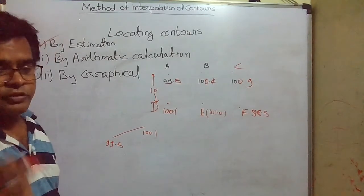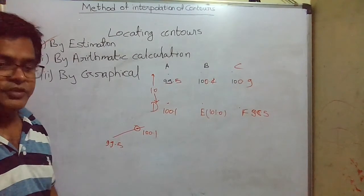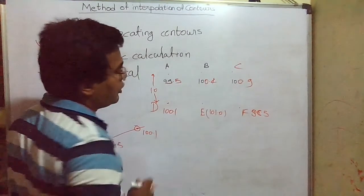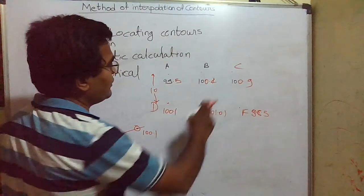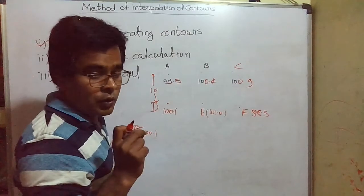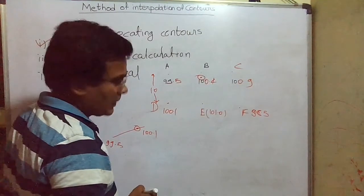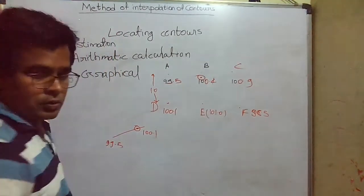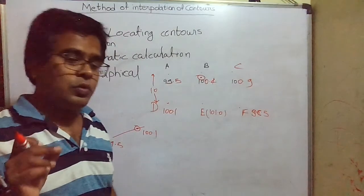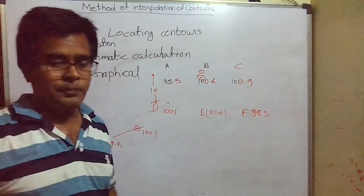Suppose between these two points we have to find the point of RL 100.5, where one point is 100.4 and the other is 101. There is a difference of 0.6 meter. If I want the contour of 100.5, it should be near to 100.4. So I can say this is the point of 100.5. Can I say it is exactly at 100.4? No — by estimation we say that 100.5 should lie near the 100.4 point. This is nothing but the estimation method — we are just estimating the location without any calculation.